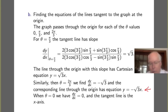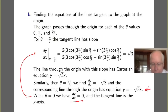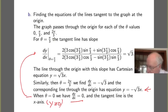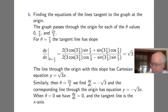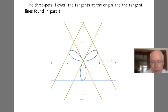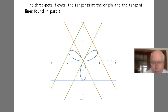Finally, when theta equals 0, the derivative expression turns out to be 0, so we have a horizontal tangent line, which is just the x-axis with equation y equals 0. Here is the graph of all the lines we found: the three-petal flower, the three tangents at the origin corresponding to the three different passages through the origin, and then the three tangent lines at the ends of the petals. We have a nice, pleasing picture.